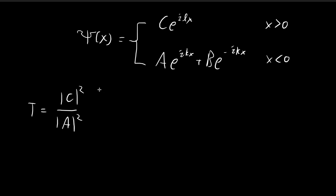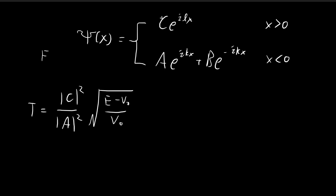The problem tells us that we need to modify this formula by multiplying it by a correction factor. So apart from calculating this ratio, we also need to multiply by (E minus V0) divided by V0. In the book, Griffiths uses the symbol f instead of c — that's just the constant he tags on to the term representing the wave traveling beyond the barrier. It doesn't really matter what constant you use; we've been using c, so I'm just going to use c here.